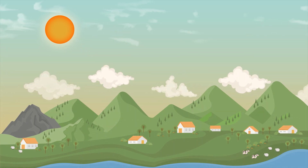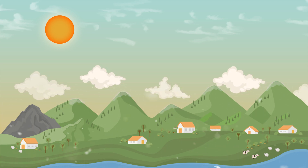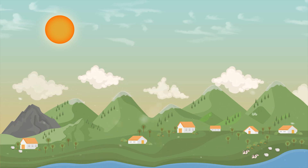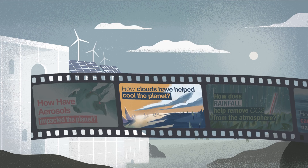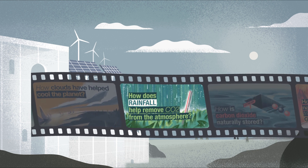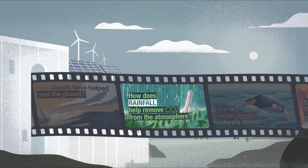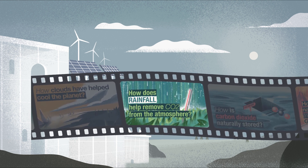Eventually, the water droplets in clouds return to the Earth's surface as precipitation in the form of rain or snow. In the next video, we'll summarize how precipitation patterns influence the climate system.